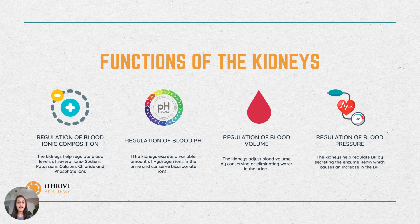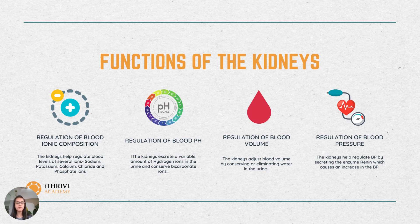The next function is that kidneys help in regulation of blood volume. The kidneys adjust the blood volume by conserving or eliminating water in the urine. An increase in blood volume increases blood pressure as well, and a decrease in blood volume decreases blood pressure. The next is regulation of blood pressure.